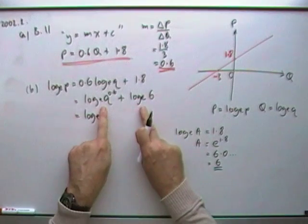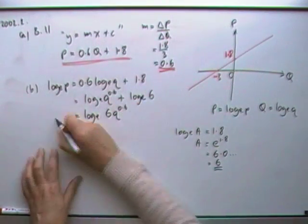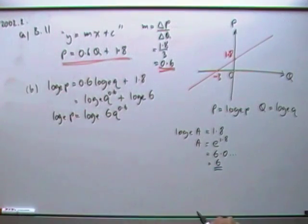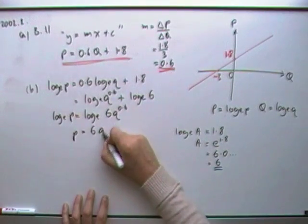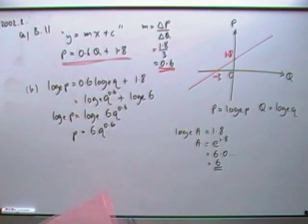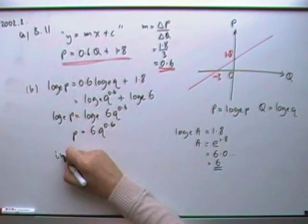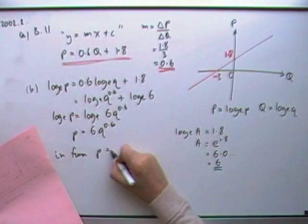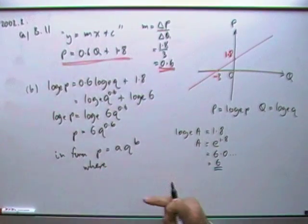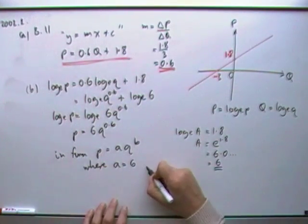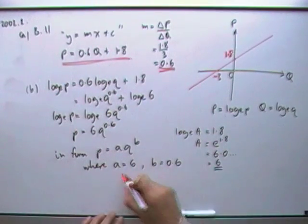Because if I've got a log plus a log then I can multiply the two parts so that's 6Q to the 0.6. So log e of P equal to that and then inverse of log both sides, P equals 6Q to the 0.6, which is what it asks for because it says show that P and Q satisfy that relationship. And it does because that is in the form of P equals AQ to the b. State the values of a and b where a equals 6 and b equals 0.6.